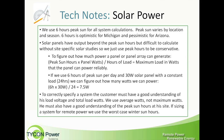Then we add enough solar capacity to match the peak sun hours. So if there are six hours of peak sun, you need 30 watts of panel. If you have three hours, you're going to need 60 watts of panel.